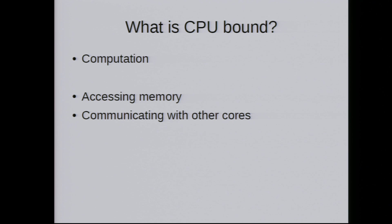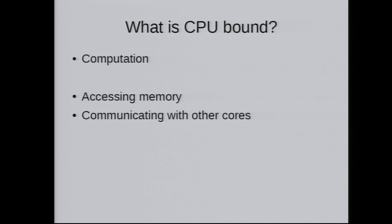On a high level, CPU-bound can be split into three things. First is pure computation — computing something that takes time. That's pretty well understood; we have algorithms, O(N) notation, and we can minimize computations. Second is accessing memory — cache misses — which is often overlooked. It's already two to three orders of magnitude slower than computation. Third is scaling: when using more cores, unless you have embarrassingly parallel work, any dependencies mean communication between cores, which prevents you from getting more work done.